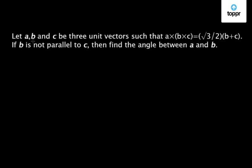Let A, B and C be 3 unit vectors such that A cross B cross C is equal to root 3 by 2 times B plus C. If B is not parallel to C, then find the angle between A and B.